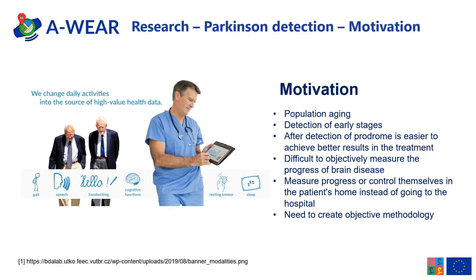On this slide I will talk about the motivation of the research. One of the main problems that society will face within 30 years is the population aging phenomenon. The occurrence of neurodegenerative diseases is connected with old age, and one of them is Parkinson's disease. When Parkinson's treatment is administered in the early stage, the impairment of health is significantly smaller. This is the reason why early detection of this disease is highly demanded. However, it is not easy to objectively measure the progress of brain disease. The evaluation used in clinical practice is based on the so-called Unified Parkinson's Disease Rating Scale, which is quite subjective and non-automatized.